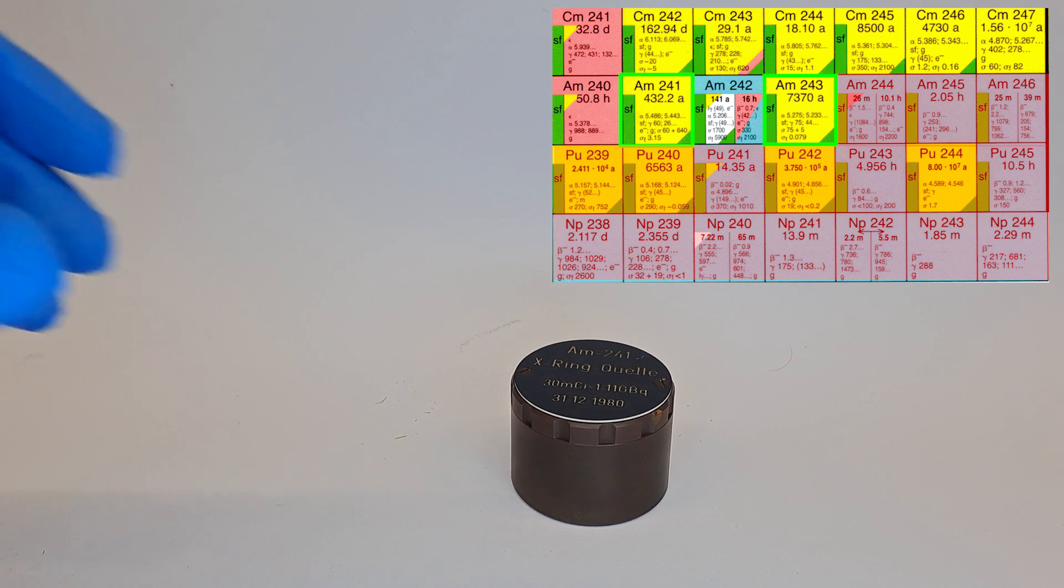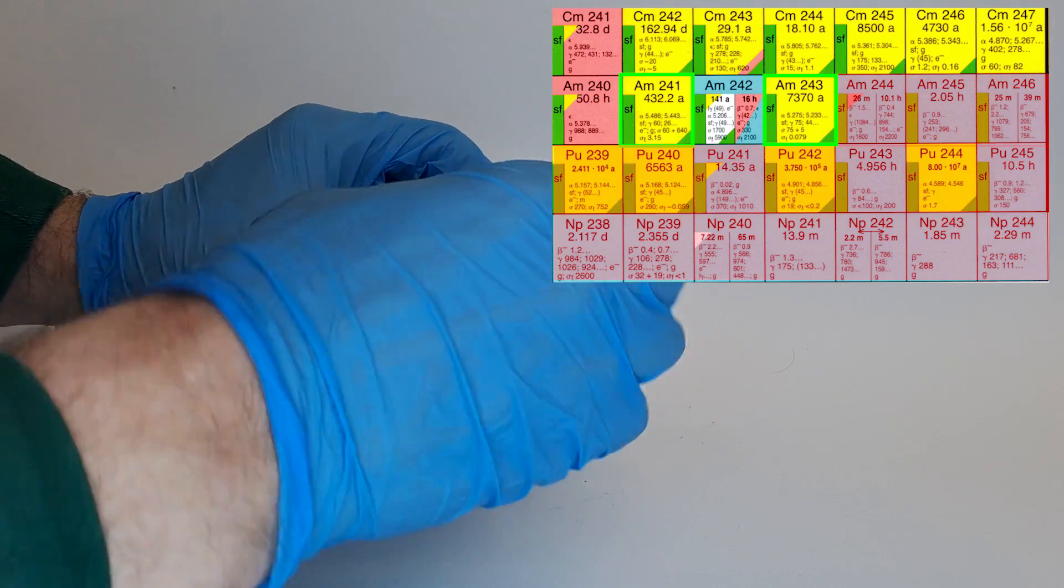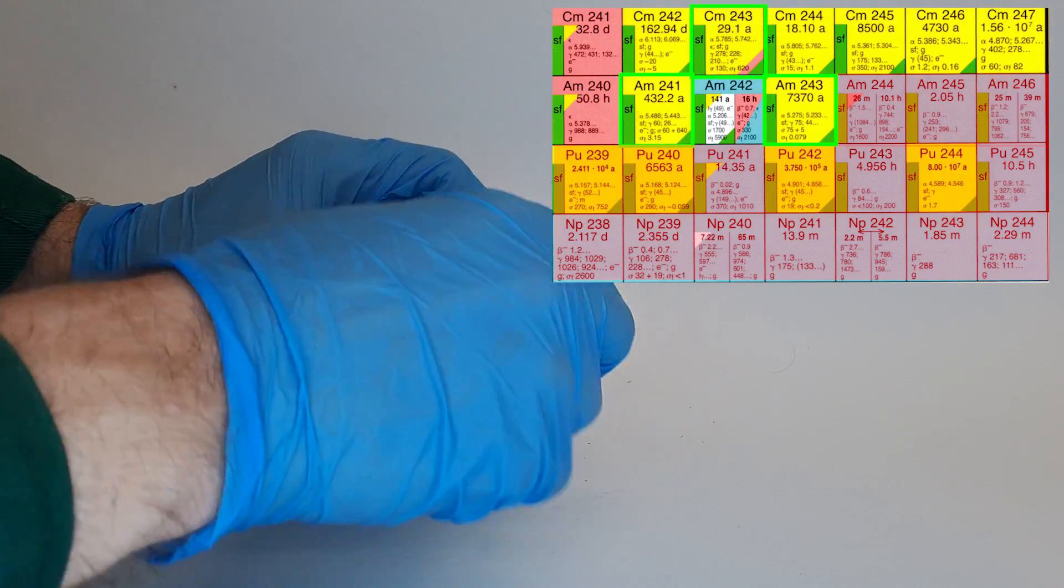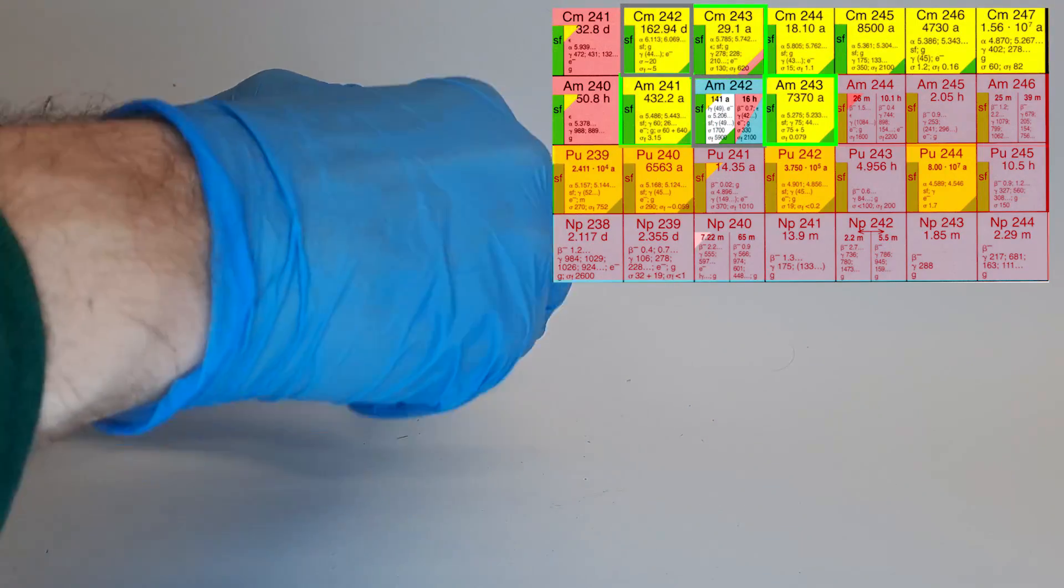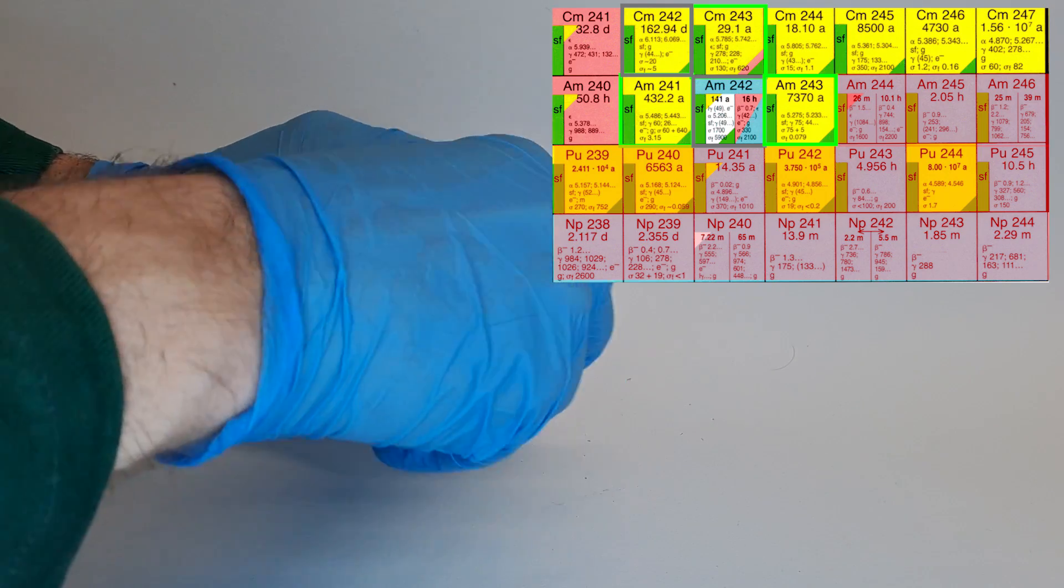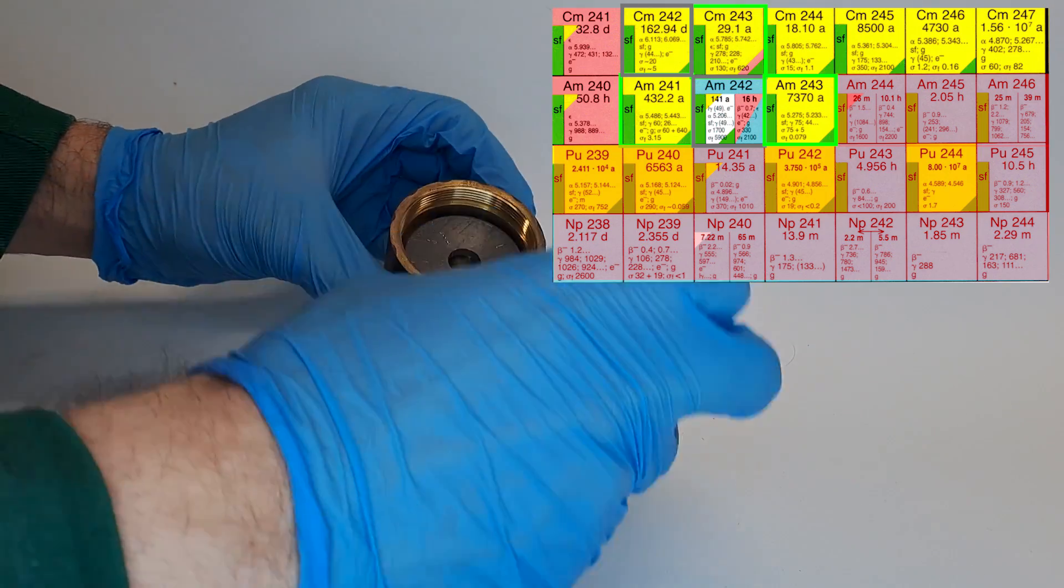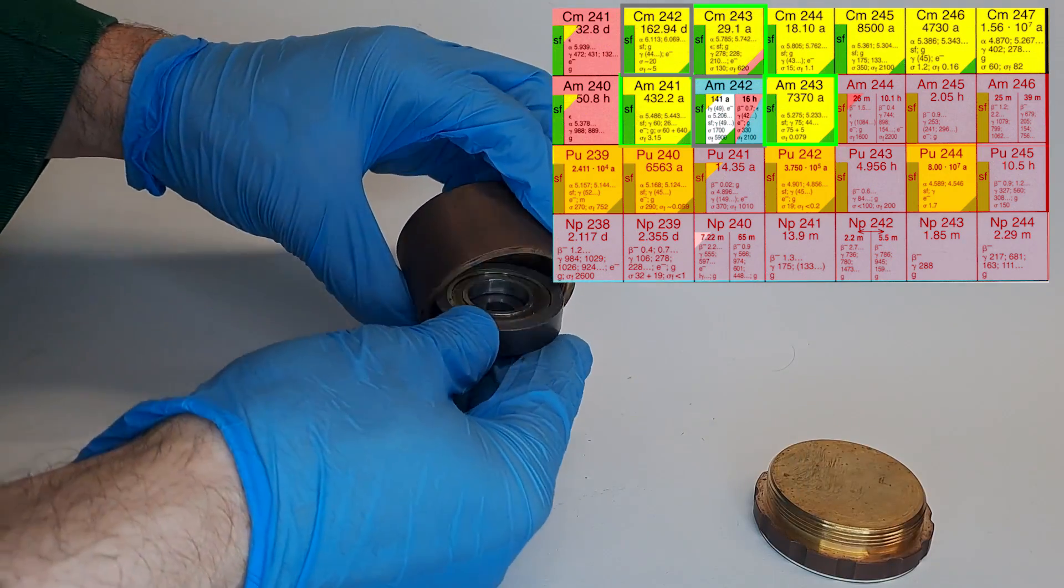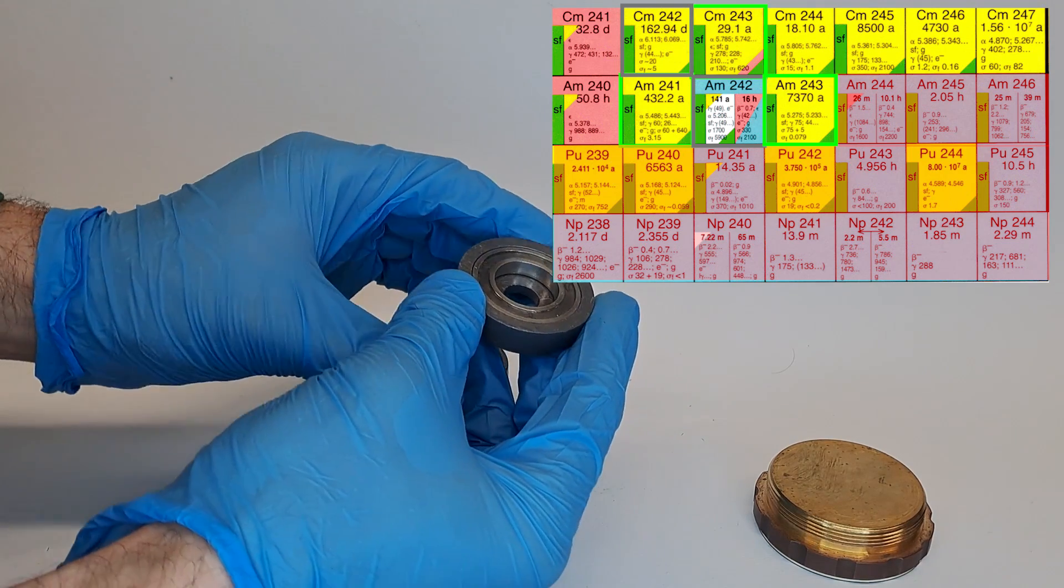In summary, we have evidence for curium-243 in the americium-241 sample. These radionuclides could also be present, but they are not detectable. Curium-244 would be less likely, but I don't have evidence against its presence in this sample.